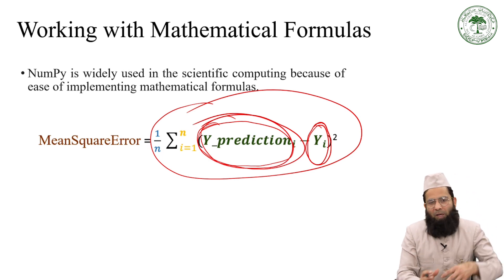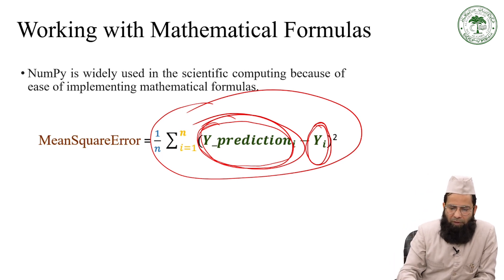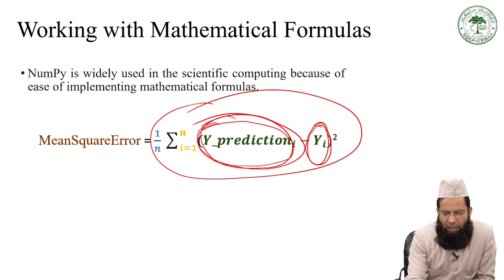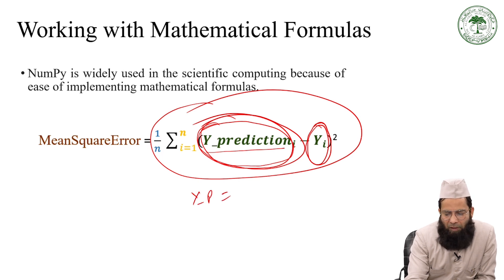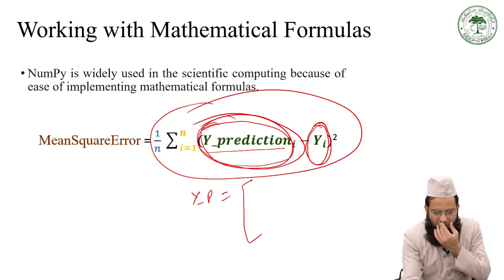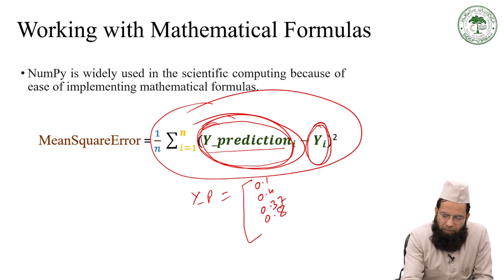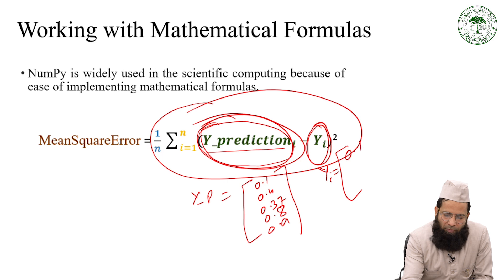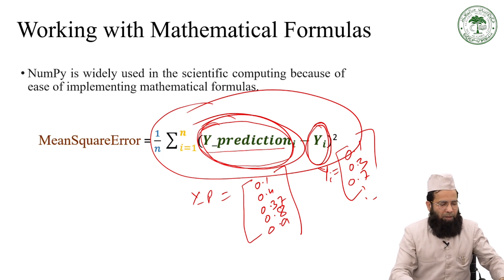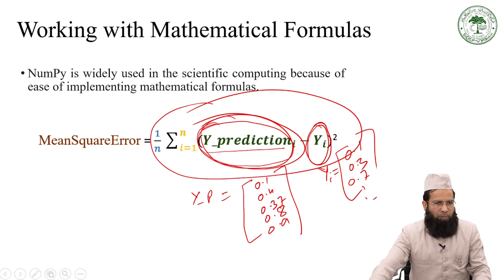How can we solve this type of problem? Suppose you are having this data and you want to solve it. What I would try to solve here: I will randomly fill the Y_prediction values. Suppose values like 0.1, 0.4, 0.37, 0.8, 0.9 and so on. Let me switch to the IDLE where I will try to solve the mean square error and how we can calculate it.